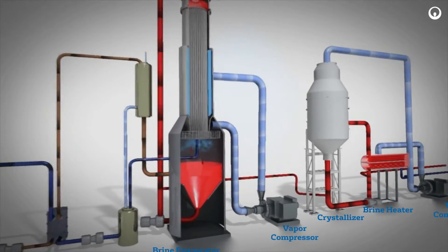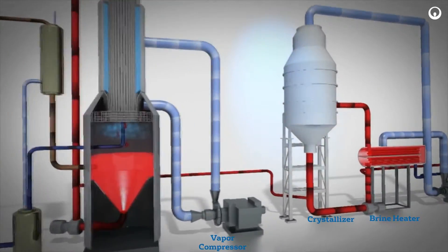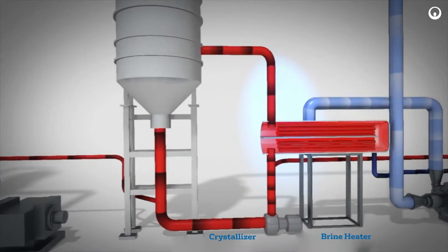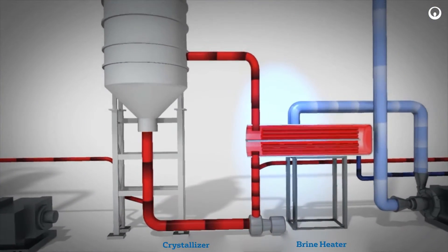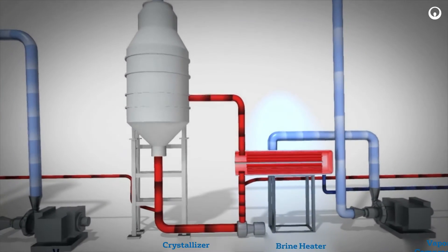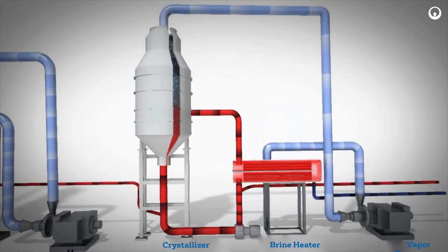Concentrated brine from the brine evaporator is sent to the brine crystallizer. The concentrated brine is routed to the shell and tube brine heater, where it is heated to above its boiling point. The heated brine then enters the crystallizer vapor body.